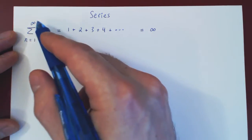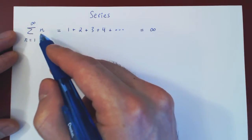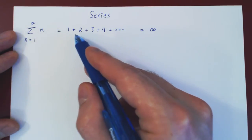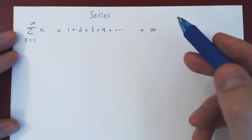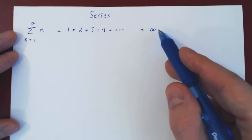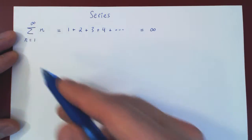That's really all a series is — we are trying to see if we can add an infinite list of real numbers. In this case it does not exist, and so we say the series diverges.